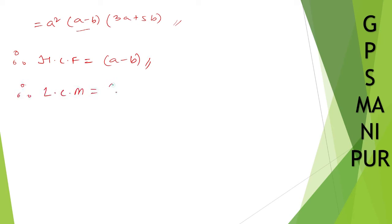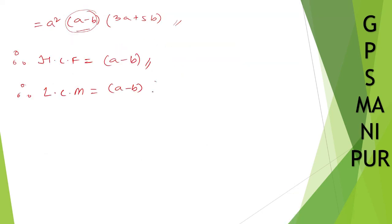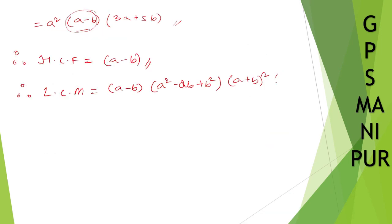For LCM: first write down the common factor (a minus b). From first polynomial write the remaining (a square minus ab plus b square). From second write (a square plus b square). From first also (a plus b) whole square. Since (a plus b) whole square is already included, no need to write (a plus b) again. Write a square plus b square from second.